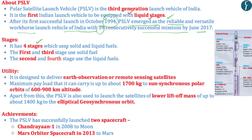PSLV has four stages which use both solid and liquid fuels. The first and third stages use solid fuel while the second and fourth stages use liquid fuel. Apart from these four stages, it also has strap-on motors — small rockets, 4 or 8 in number — arranged beside the base of the rocket, which immediately give thrust and then burn off. PSLV is thus the first rocket created by India containing both solid and liquid fuels.